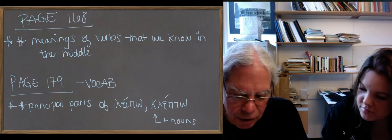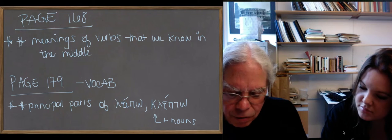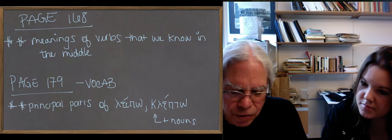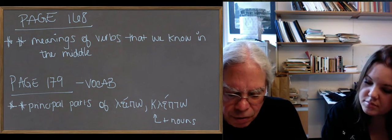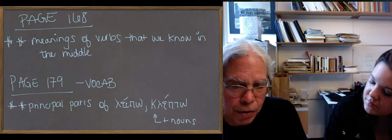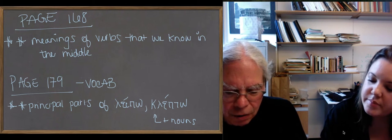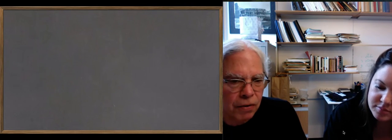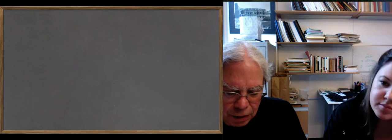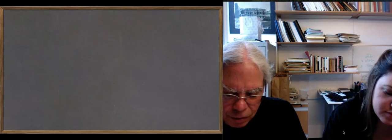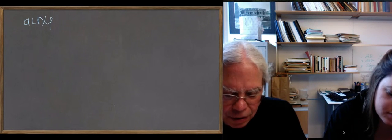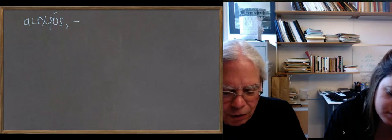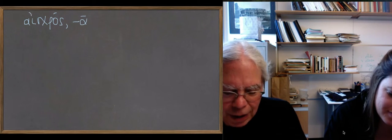All right. You also get some adjectives in this lesson. Let's just go through the list. Aischros, aischra, aischron. Notice you've got a rho before the -os. So the feminine form has long alphas where you'd expect an eta. And it means ugly, shameful, or disgusting. It's the opposite of kalos. Aischros. So it's not beautiful. It's ugly. And it's shameful. It's ignoble behavior, and stuff like that.